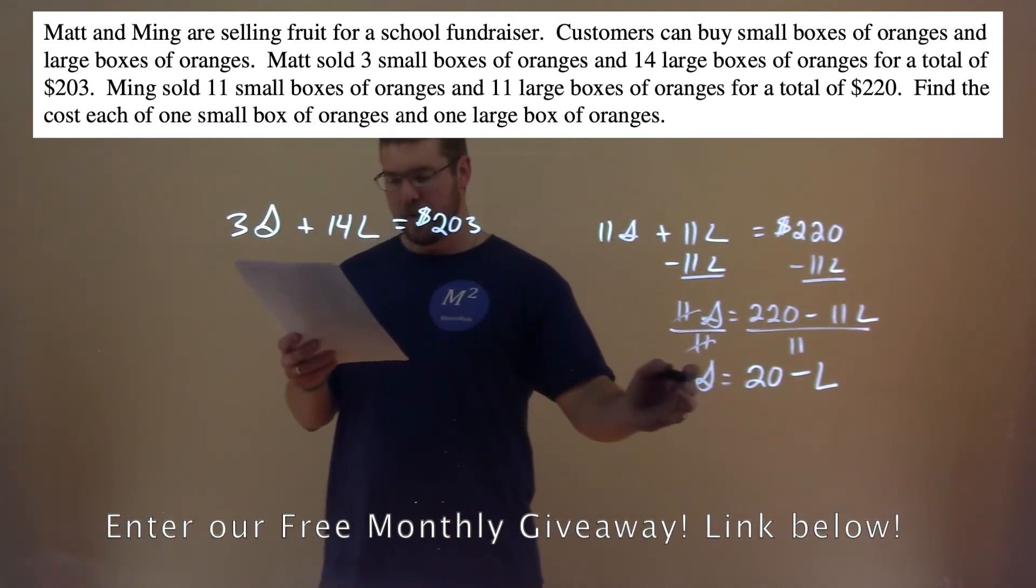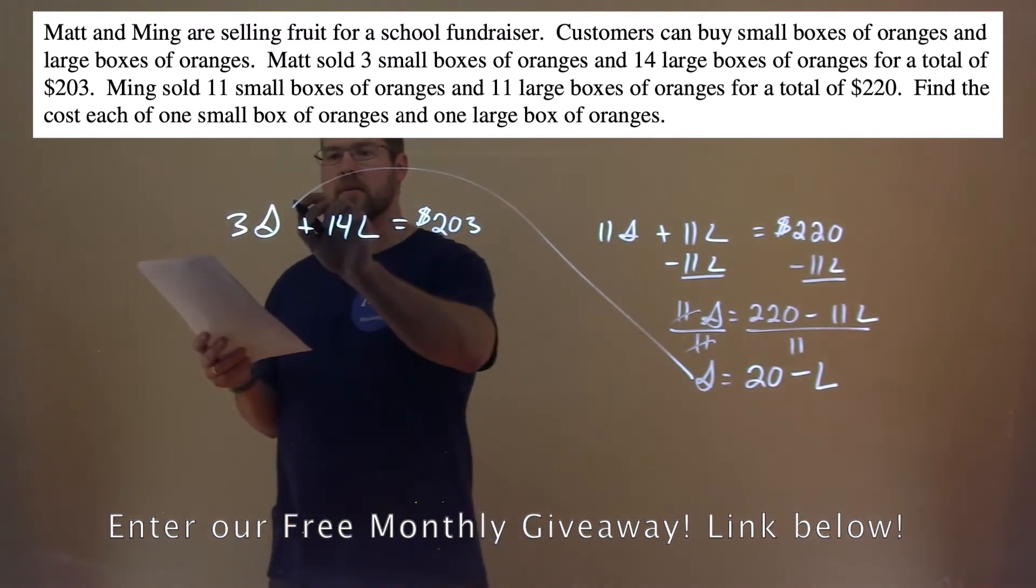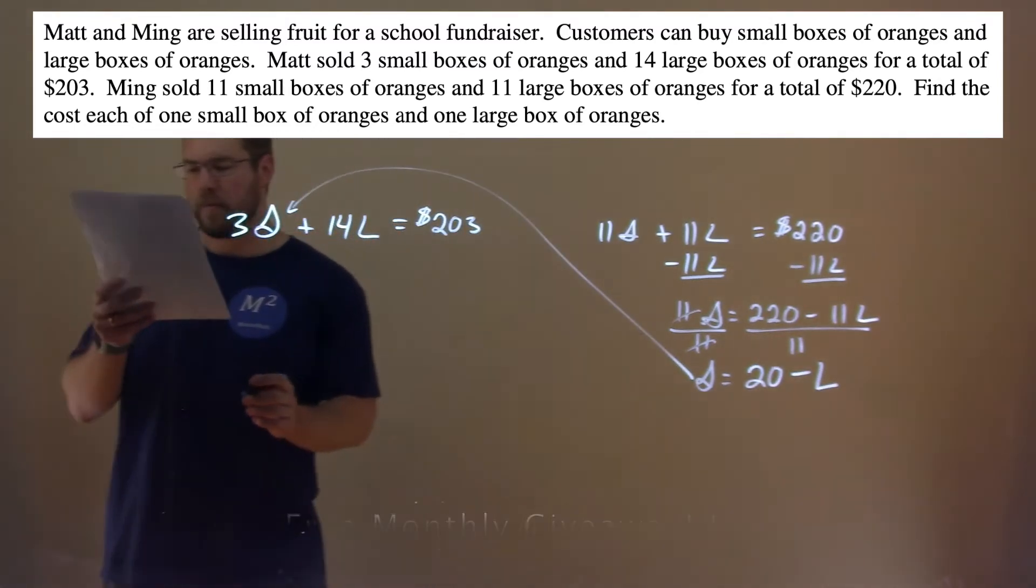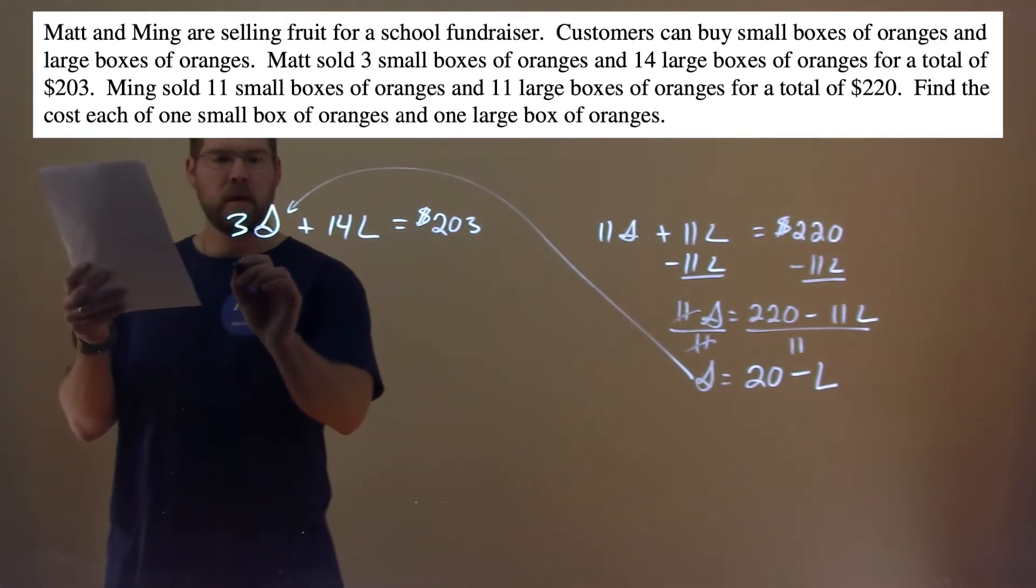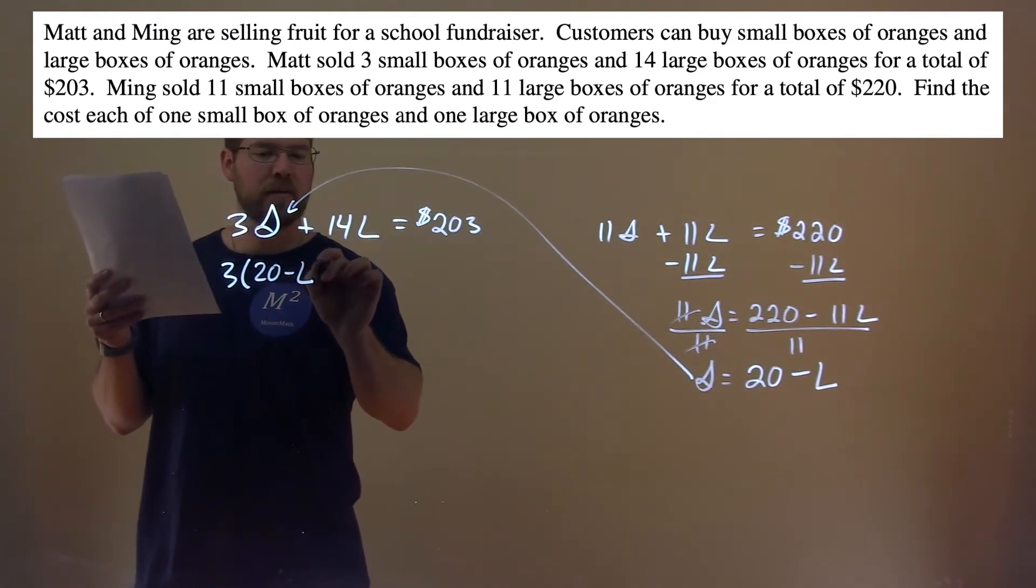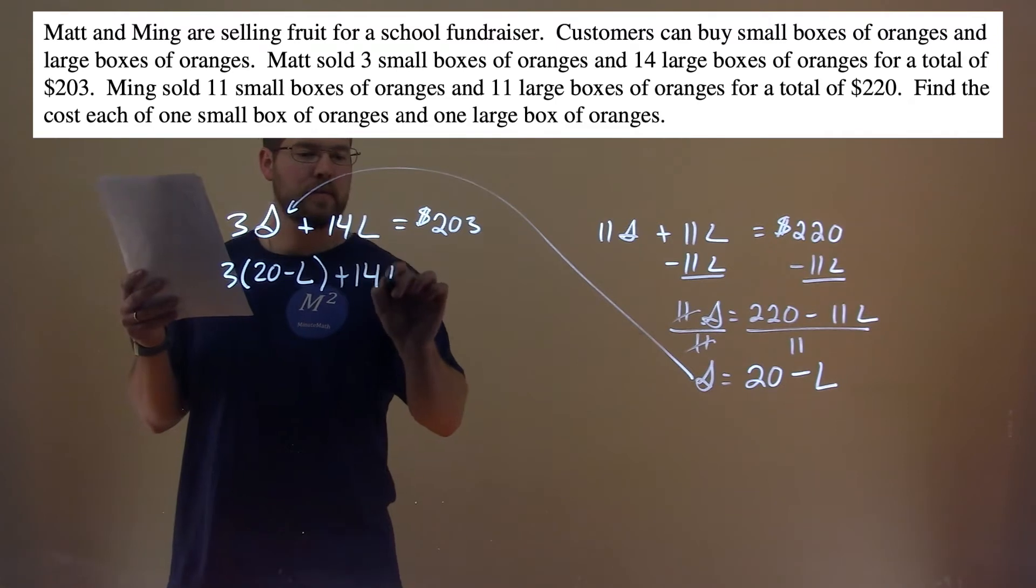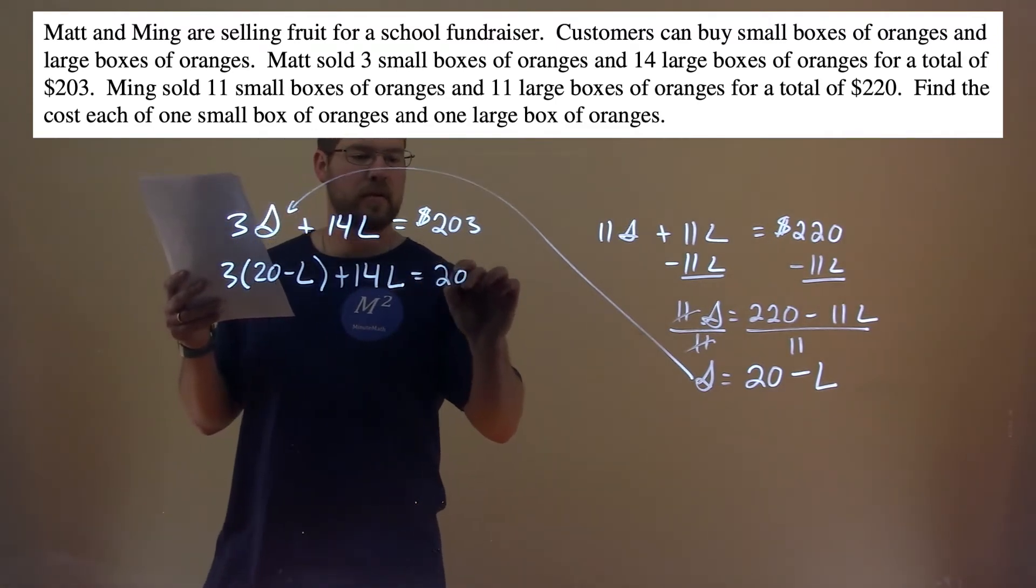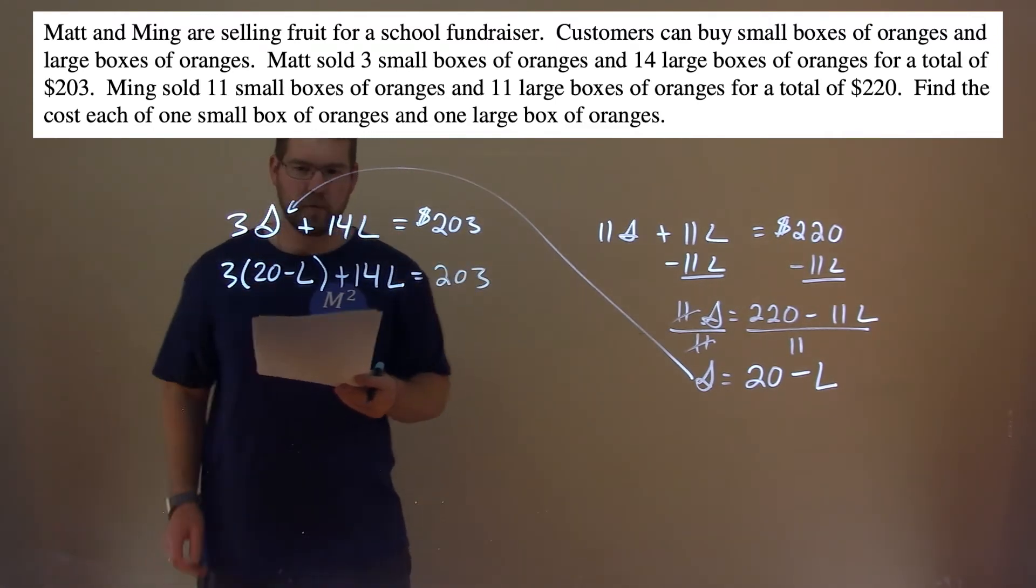Now we have S in terms of L, S by itself. We can plug that in for the S in our first equation, which is Matt's equation. So 3 times, instead of S, we put in 20 minus L plus 14L equals 203. And now we're solving for L.